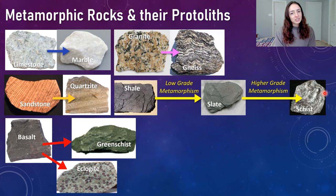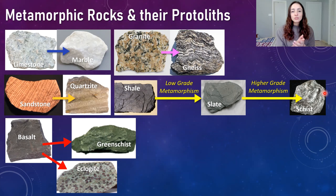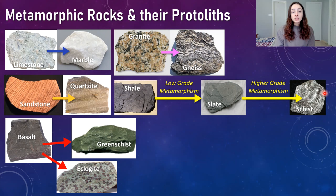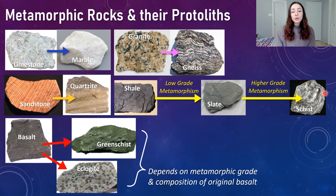Basalt has compositional variety, structural variety, and a lot of overall variety that makes determining its final metamorphic equivalent difficult. A couple of examples we'll discuss later are greenscist and eclogite, which are two types of metamorphic rock that can result from different types of basalt. It depends on both the original composition of the basalt and the metamorphic grade — high grade will produce something different than low grade.